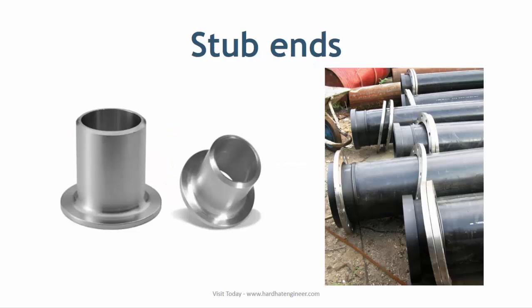Stub ends are used with lap joint flanges. In this type of flange, the stub end is butt welded with the pipe, whereas the flange is freely moved over the stub end. It is basically a flange part but covered under ASME B16.9, which is why it is considered a pipe fitting.